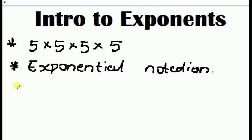So what is exponential notation? Exponential notation is a short way of writing a number multiplied by itself.